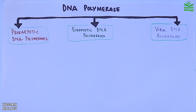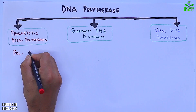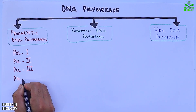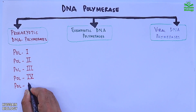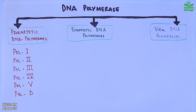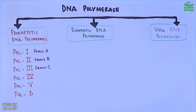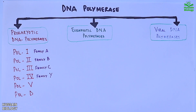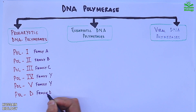In prokaryotic DNA polymerases we have DNA polymerase 1, polymerase 2, polymerase 3, polymerase 4, polymerase 5, and polymerase D. Polymerase 1, 2, and 3 belong to families A, B, and C respectively. Polymerase 4 and 5 belong to family Y of DNA polymerases. And the last one, polymerase D, belongs to family D.